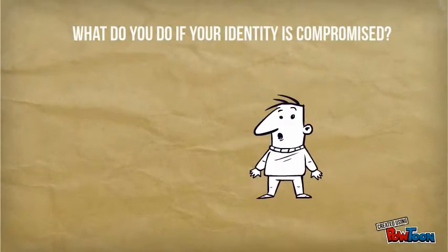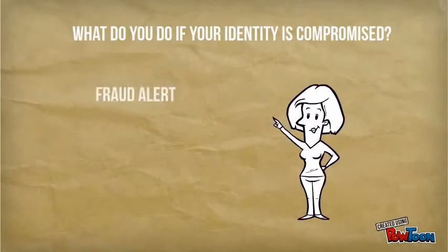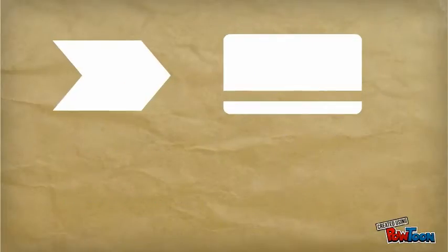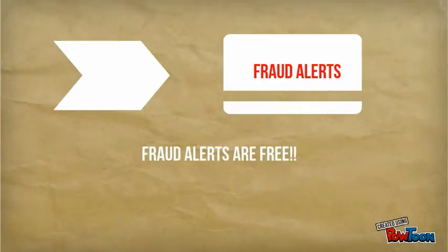What do you do if your identity is compromised? The first steps you need to take are: place an initial fraud alert on your accounts, order your credit reports, and then create an identity theft report. Placing a fraud alert on your account so the bank has to verify your identity is the biggest first step you can take. Fraud alerts are free to place and to remove so there is no hassle for you.